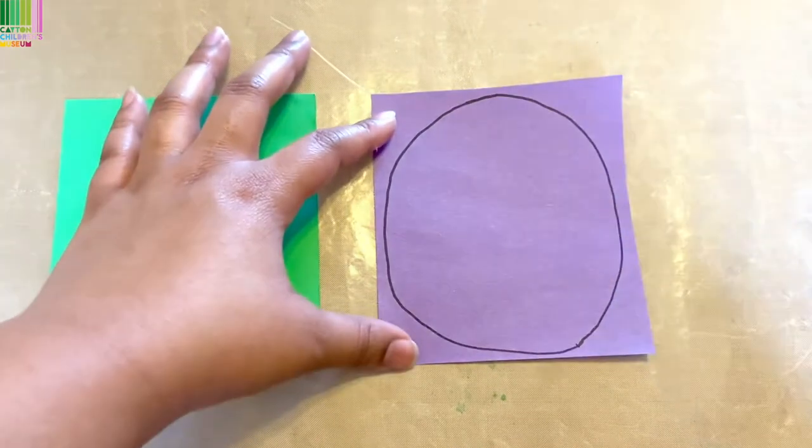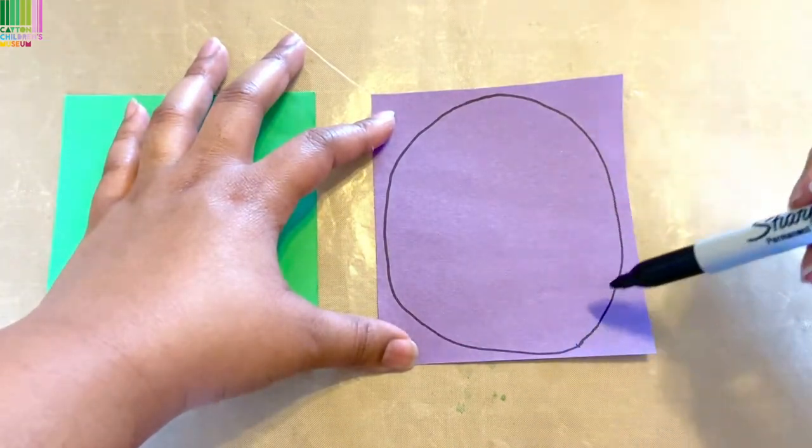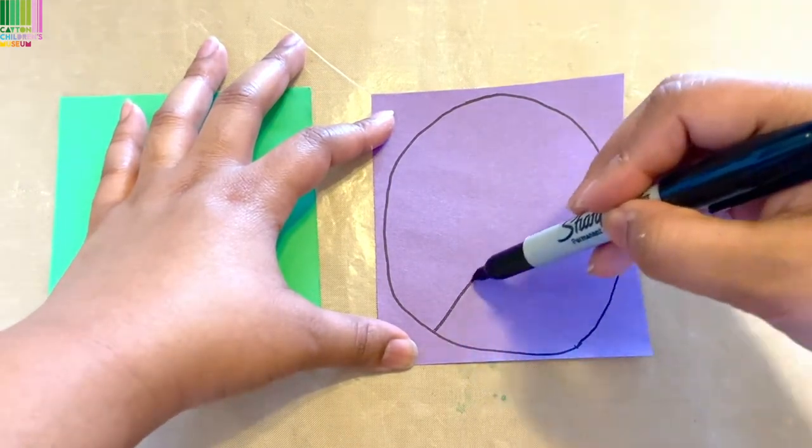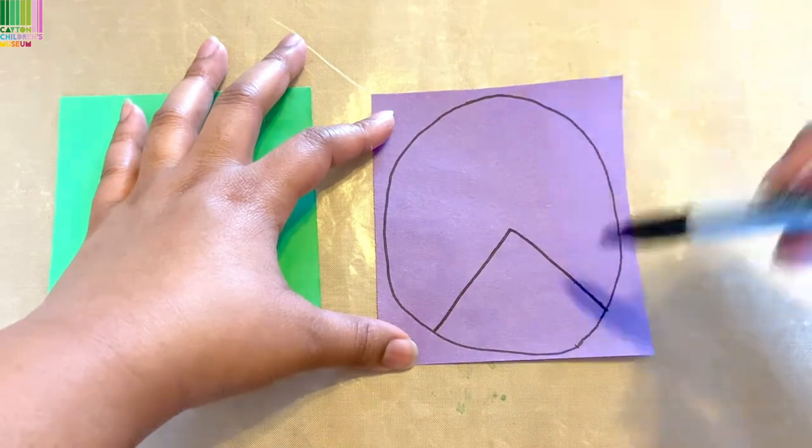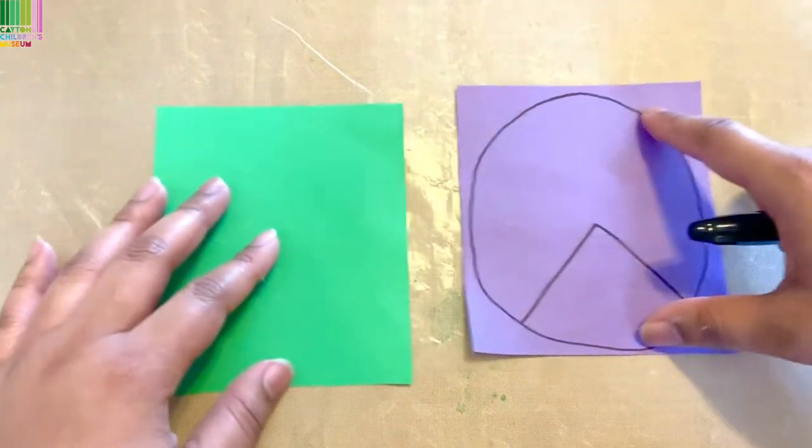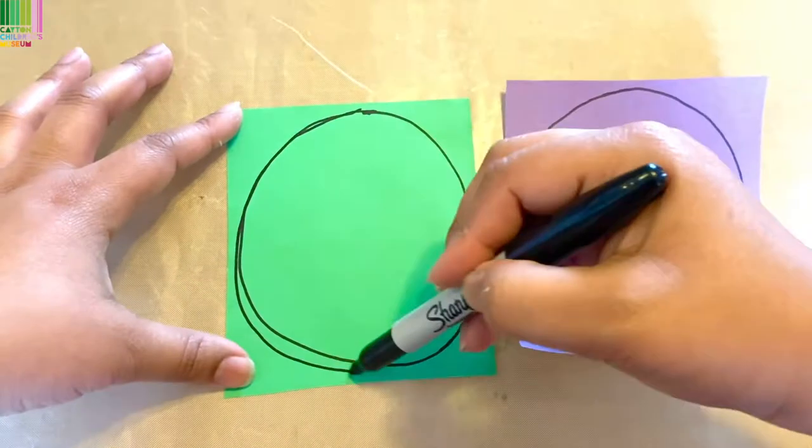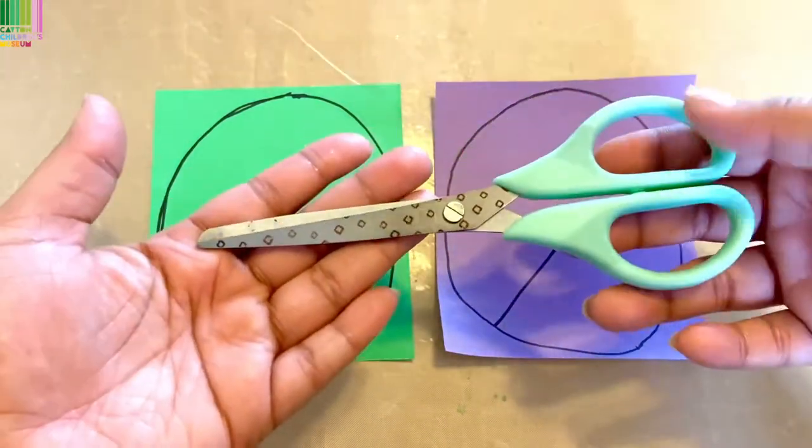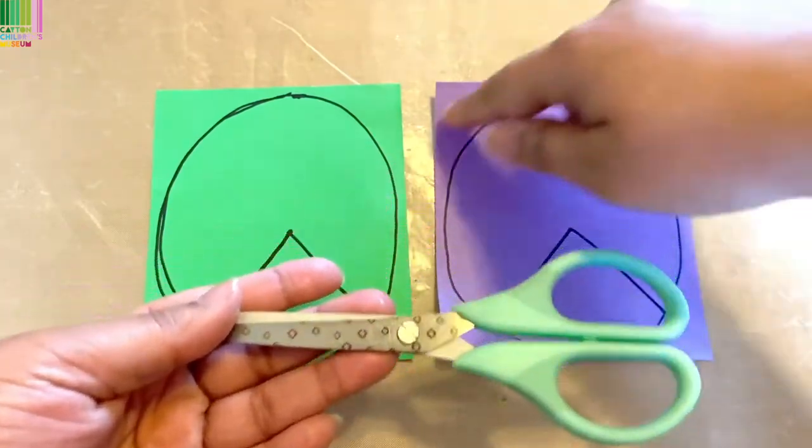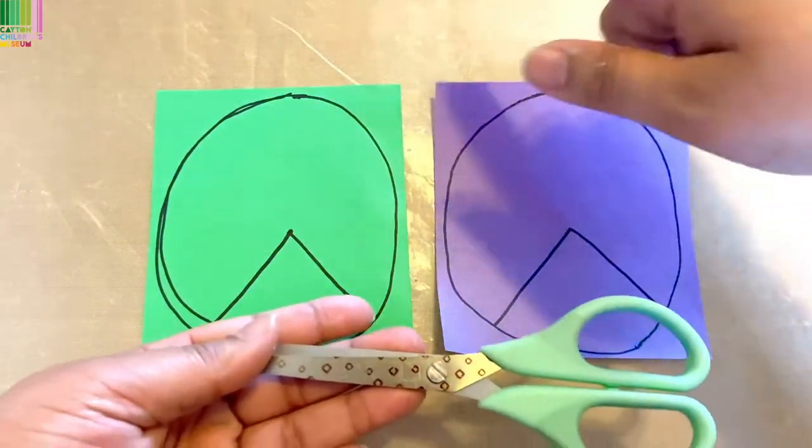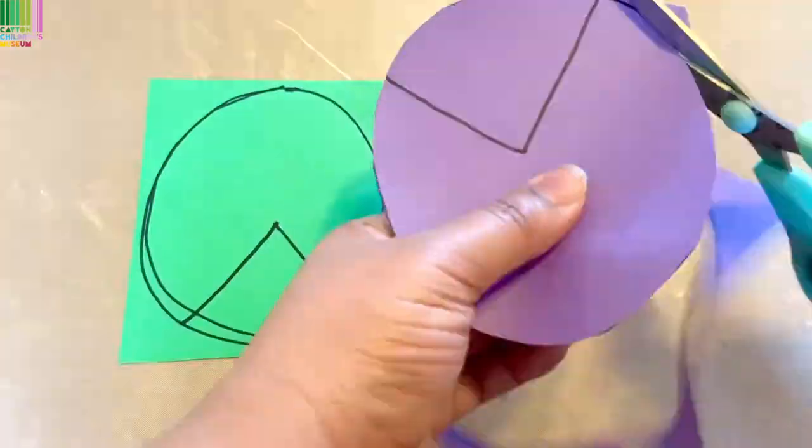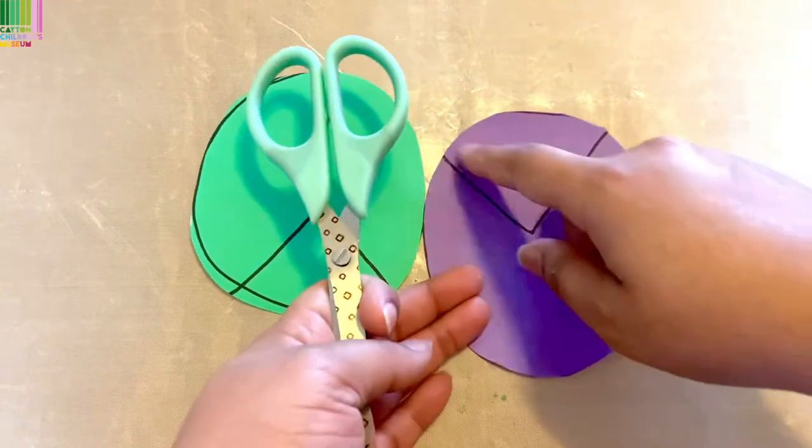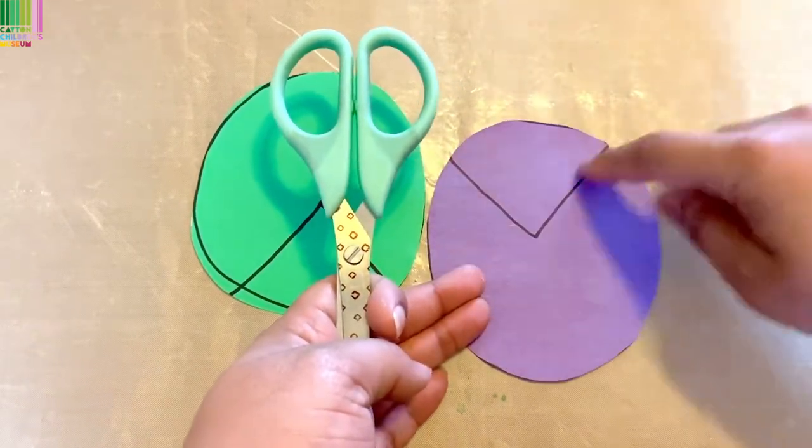Once you've gotten your circle, you're going to draw a triangle, like a slice of pie or a slice of pizza. And you're going to repeat this on your other paper. Next, you're going to go ahead and grab your scissors, and with the help of a grown-up, you want to go ahead and cut out these circles. Next, we are going to go ahead and cut out the slice of pie or slice of pizza.